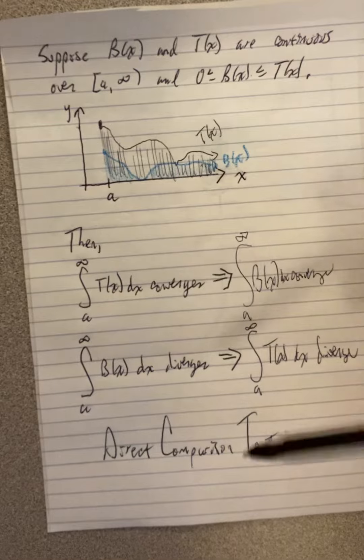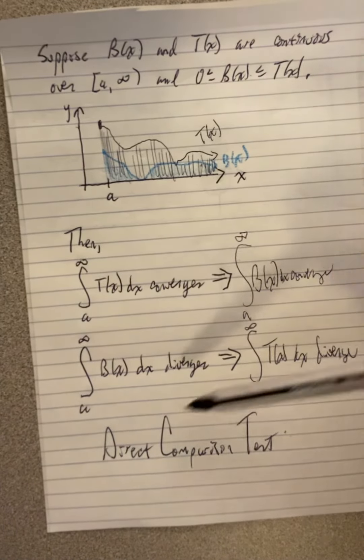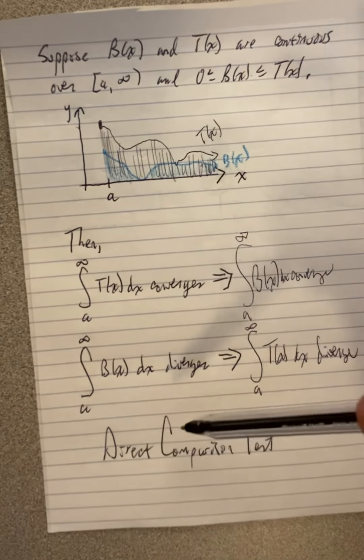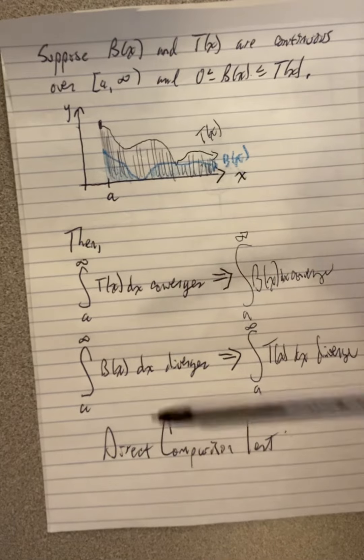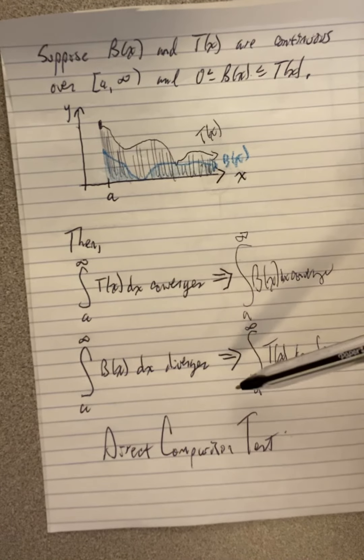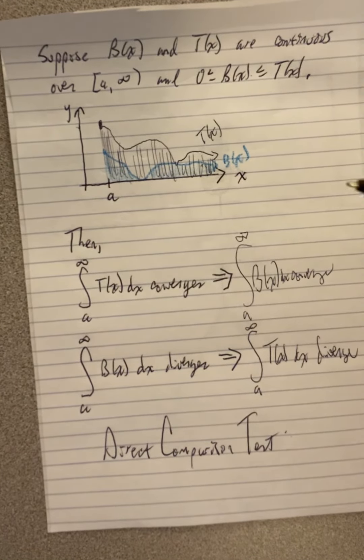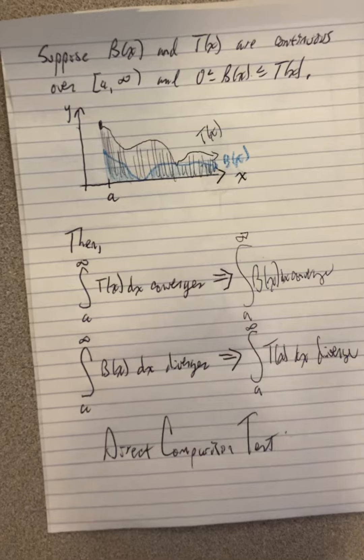And these conclusions are the results of the direct comparison test. And it's one way you will conclude whether or not an improper integral with unbounded domain converges or diverges. Math made simple. Simpson math.